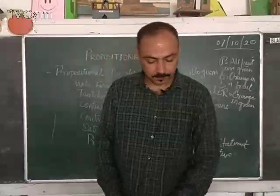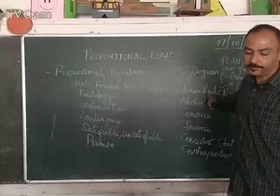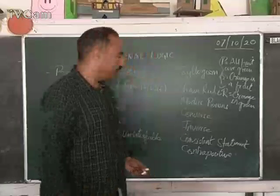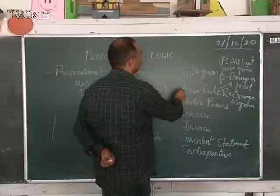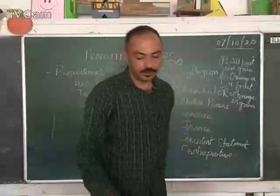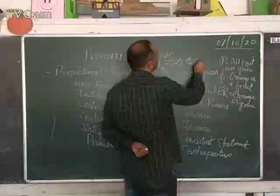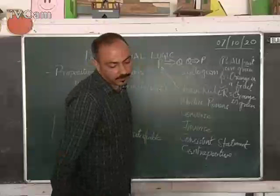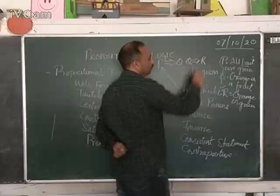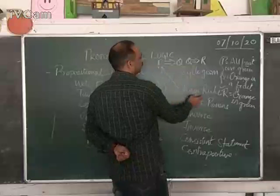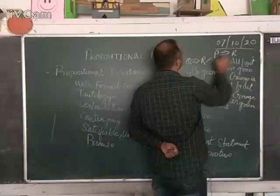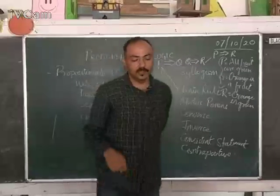The next term is the chain rule. It states that given two conditions of the form P implies Q, and Q implies R, then we can conclude the third statement P implies R. We are relating the first and third statements by eliminating the middle term. This is the chain rule.